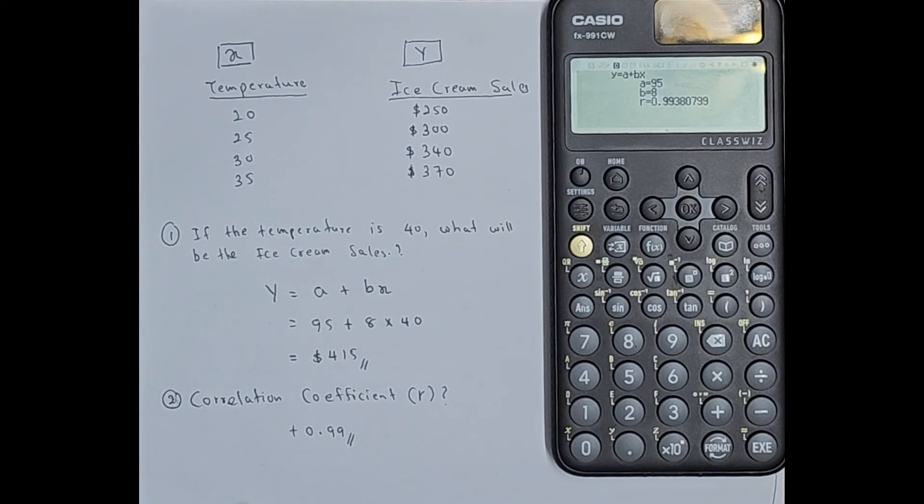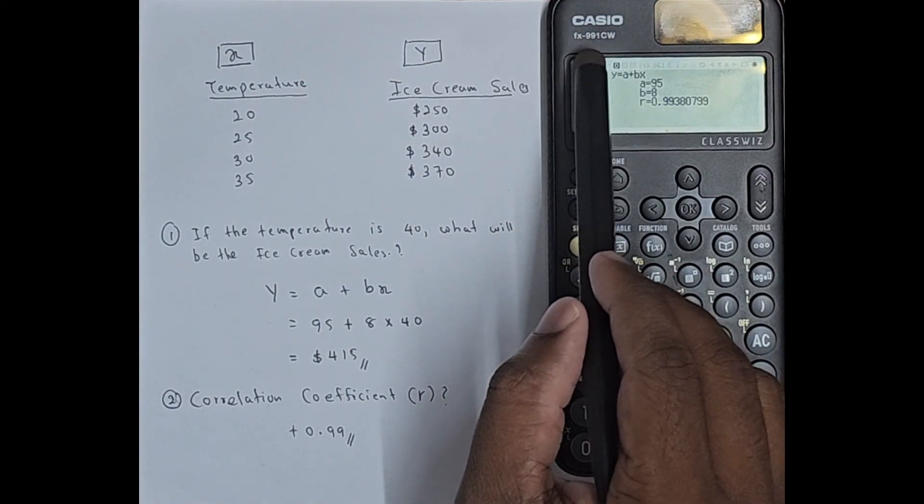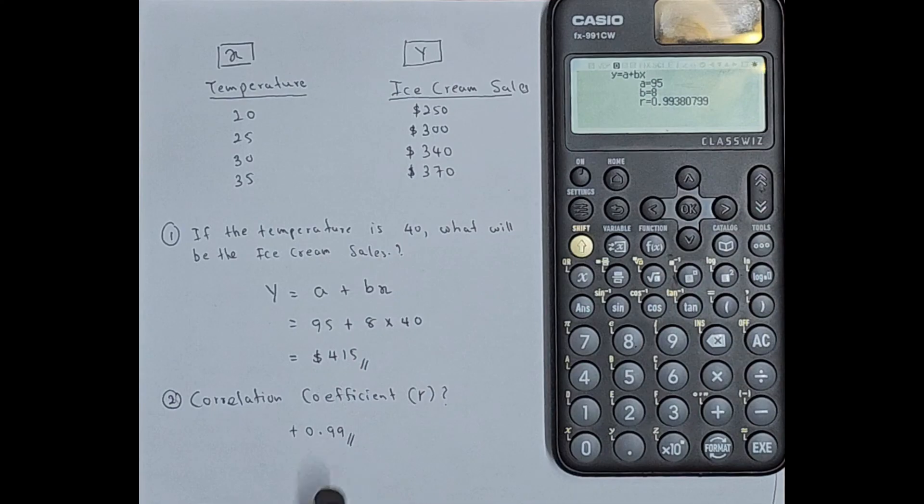So this is how you can find the A value, B value and the R value. And you can do the calculation, a regression calculation, using the Casio FX 991 CW ClassWiz calculator.